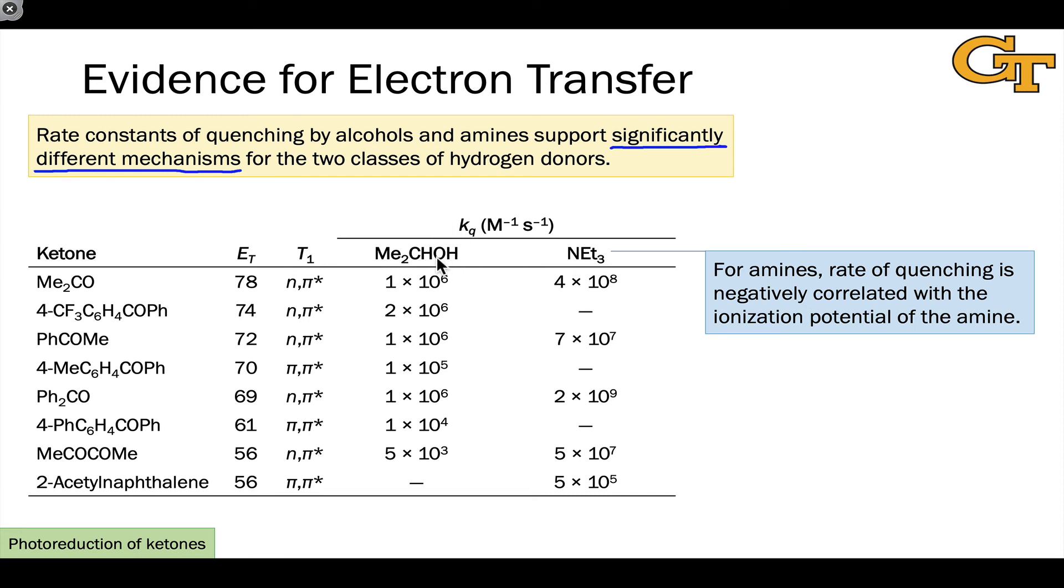The other thing we notice from this data is, whereas the rate constant of quenching decreases pretty systematically as the triplet energy of the ketone decreases, so the reaction becomes less exothermic and the rate constant decreases, consistent with our intuition, the same dependence is not observed when the amine is used as hydrogen donor. The rate constant remains fairly high even for ketones with low triplet energy, suggesting that the triplet energy of the ketone is not directly relevant to whatever mechanism quenches that state.